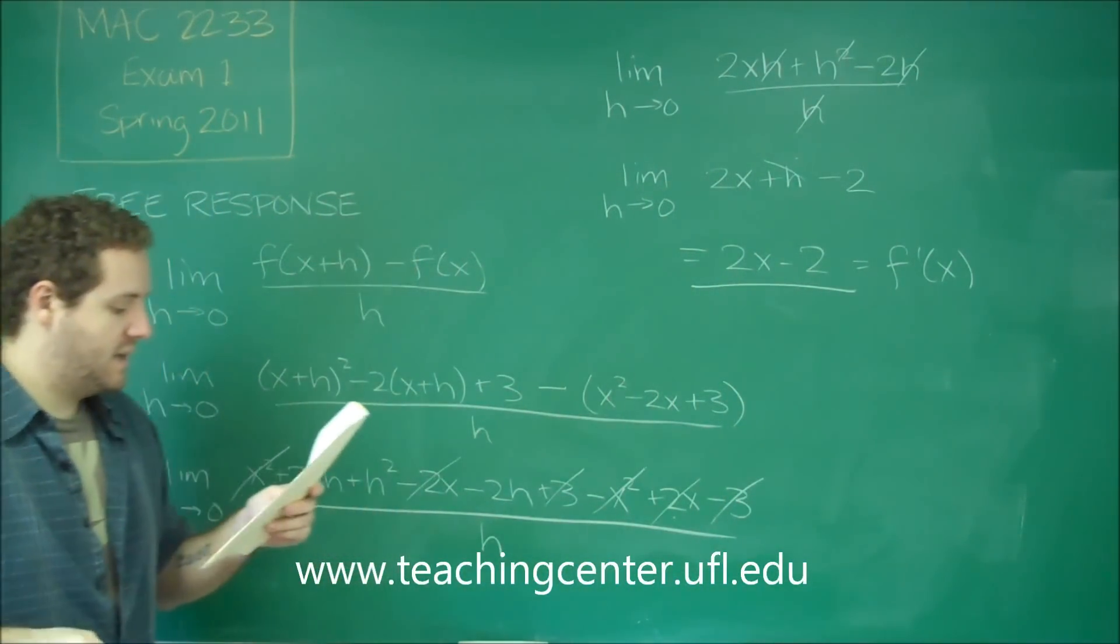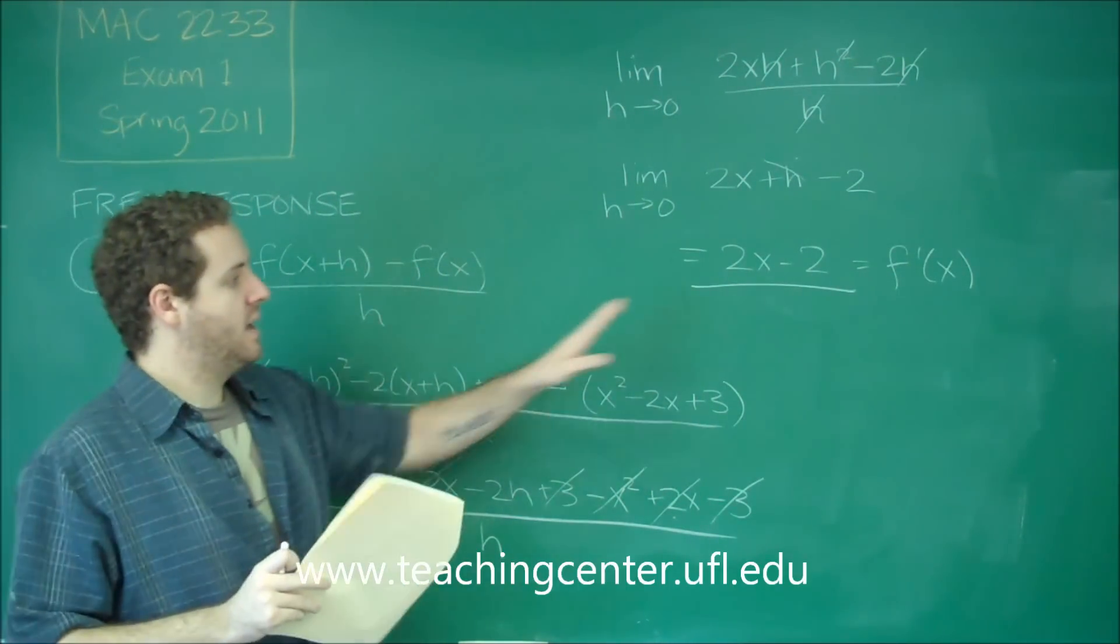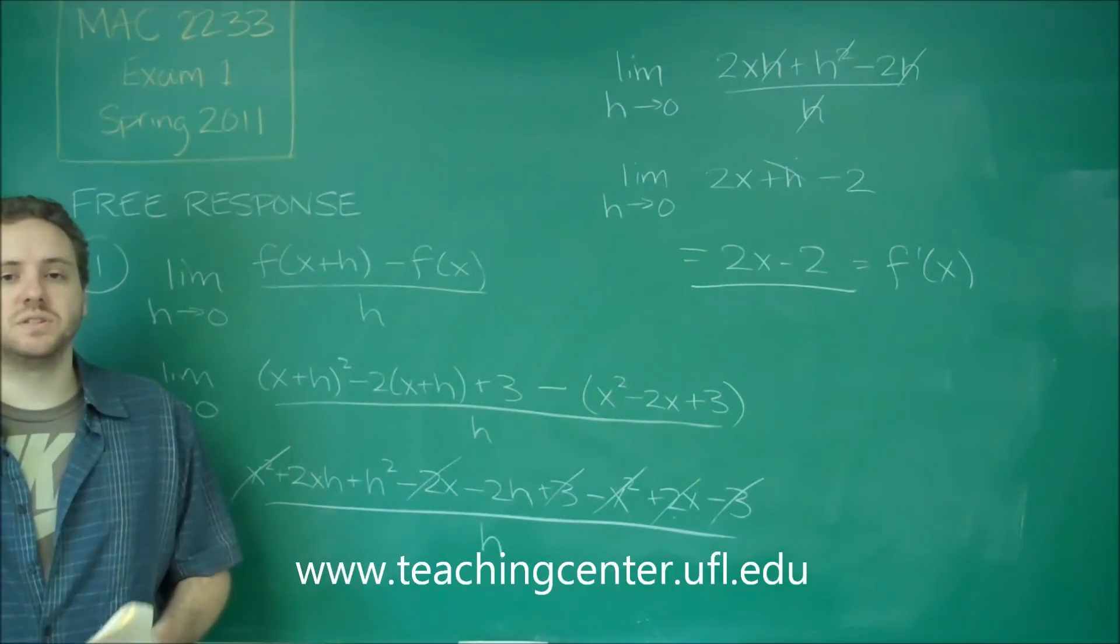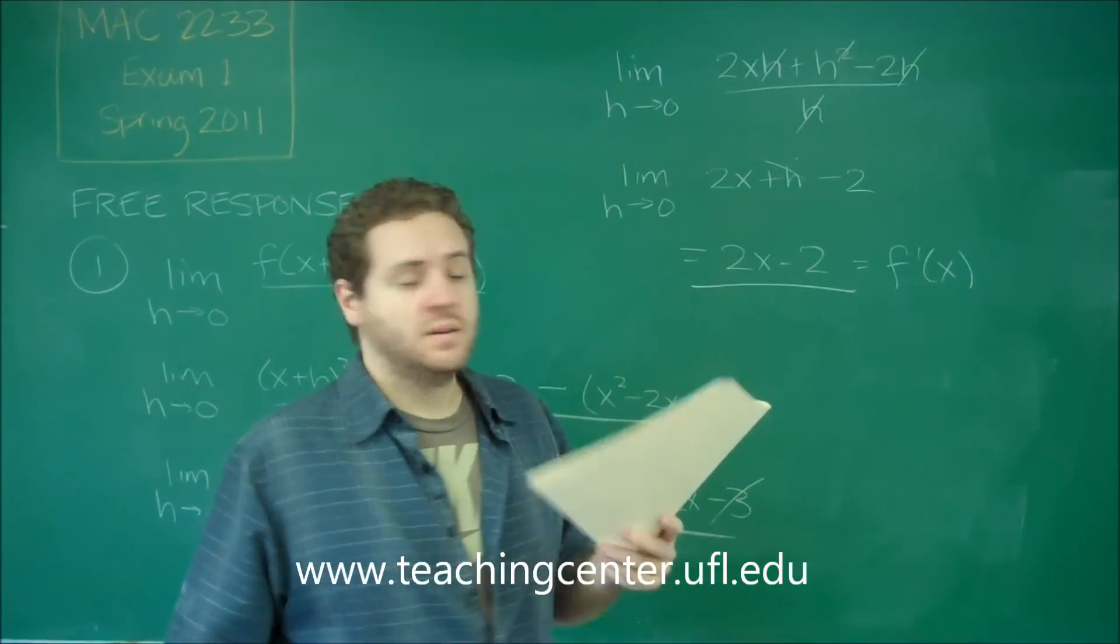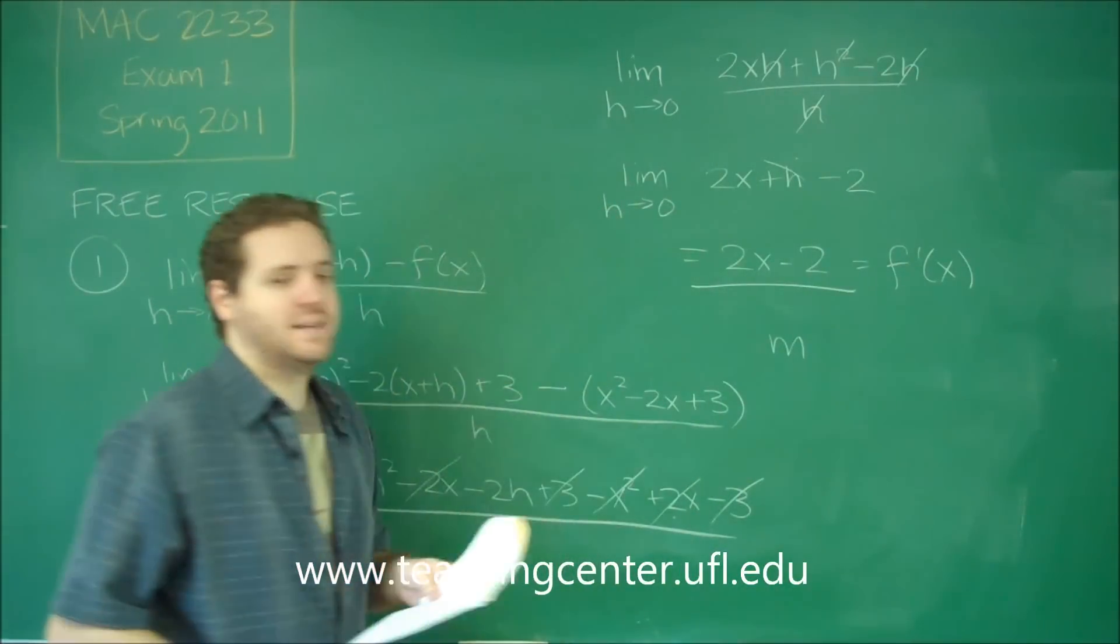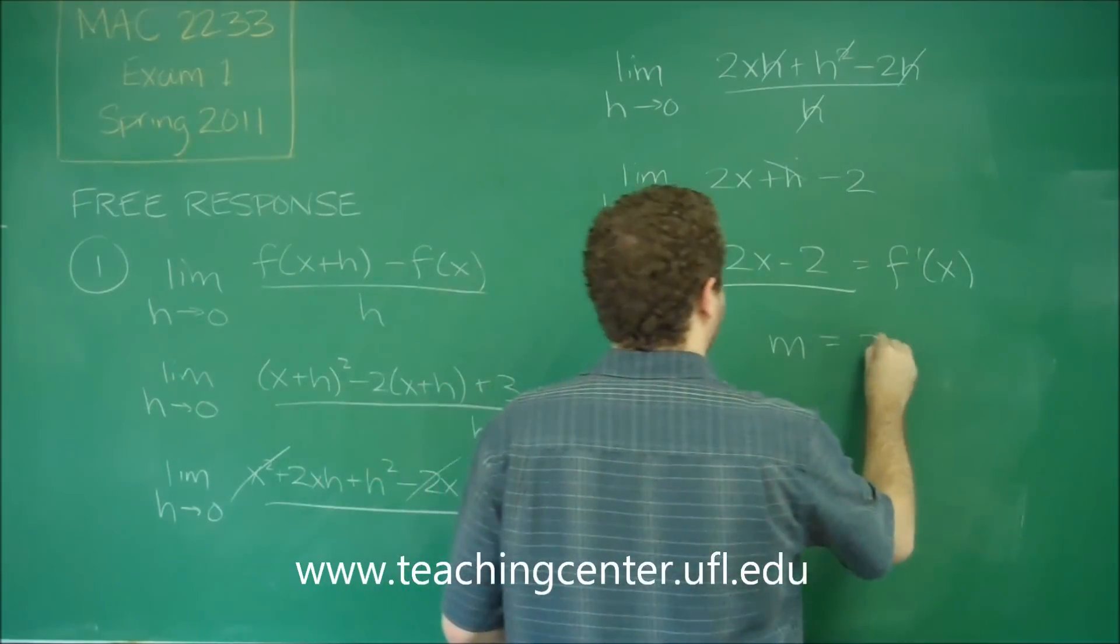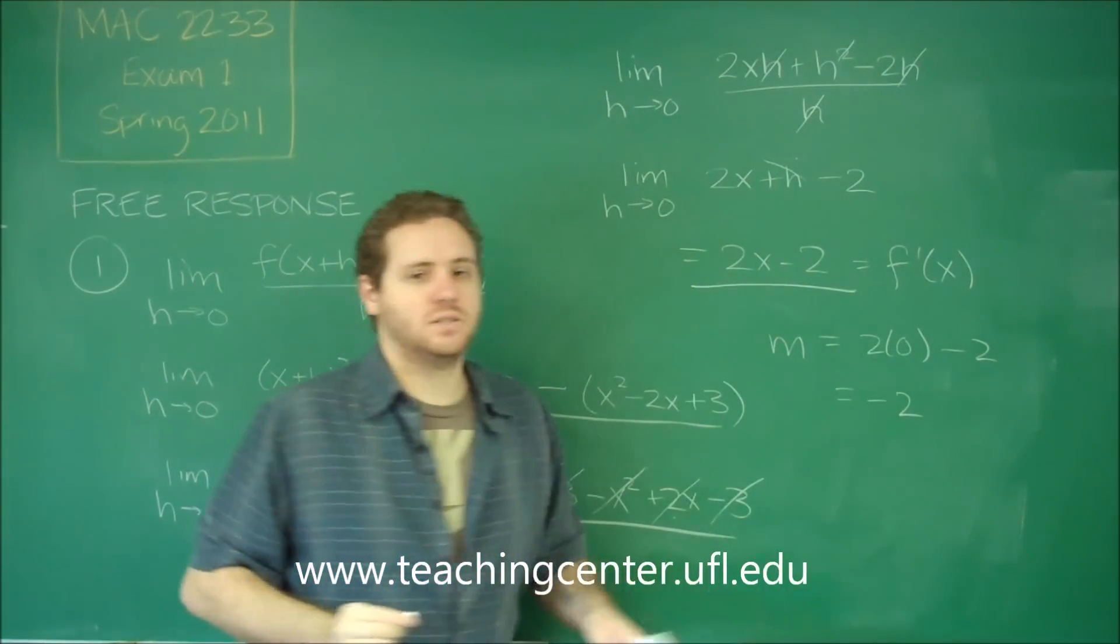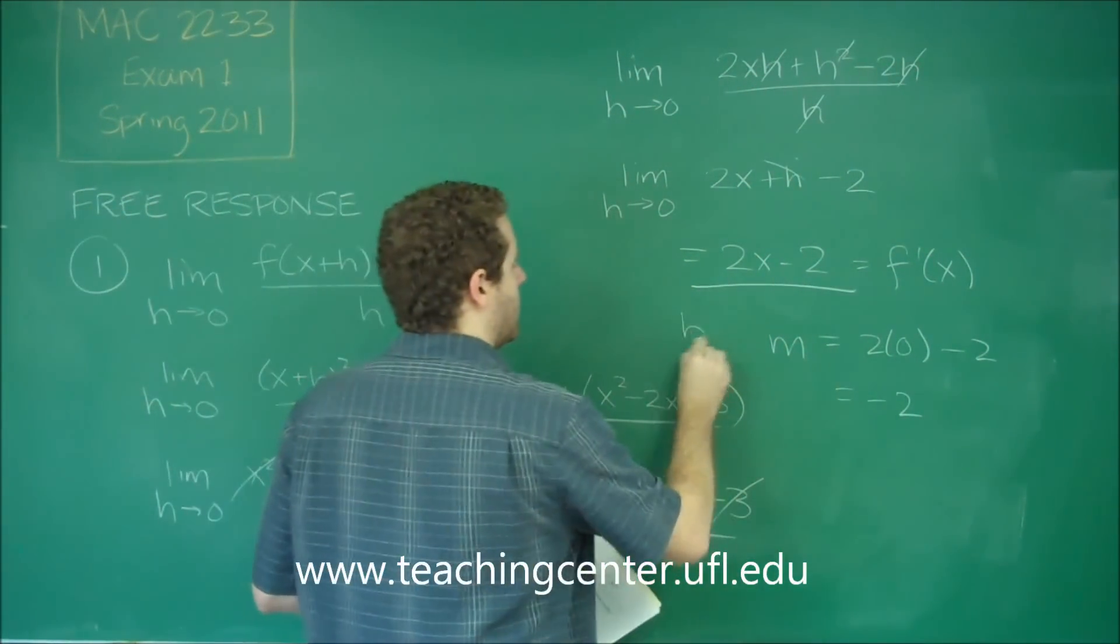So part b says to write the equation of the tangent line at x equals 0. So remember that f prime of x tells you the slope of the tangent line at any given x. So the slope that we want is when x equals 0. So we just plug in 0 for x. We get that our slope is negative 2.